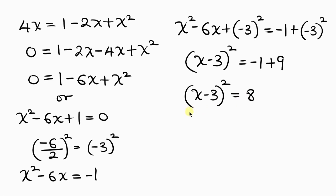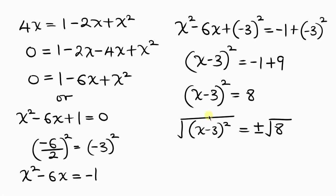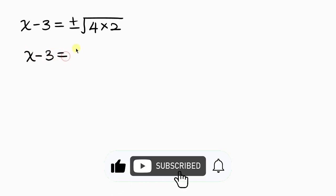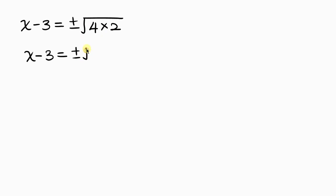Our next step is to take the square root of both sides. Taking the square root of the left hand side and the square root of the right hand side — this time putting plus or minus. So x minus 3 equals plus or minus the square root of 8, which is the same as the square root of 4 times 2. That means plus or minus the square root of 4 times the square root of 2, giving plus or minus 2 root 2.